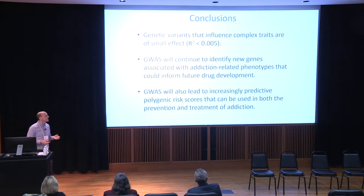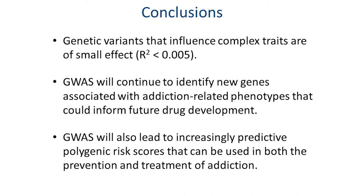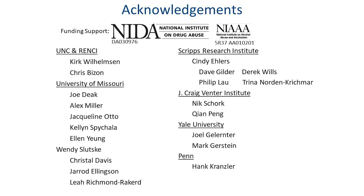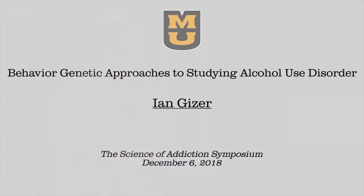To sum up: genetic variants are of small effect by themselves, but identifying the genes critical to the etiology of addiction-related phenotypes will help inform novel drug development and drug repositioning. Polygenic risk scores have great potential in both prevention and treatment efforts going forward. I only had 10 minutes, so I want to thank all of my collaborators, including Bruce Barthelow, who have made this work possible.